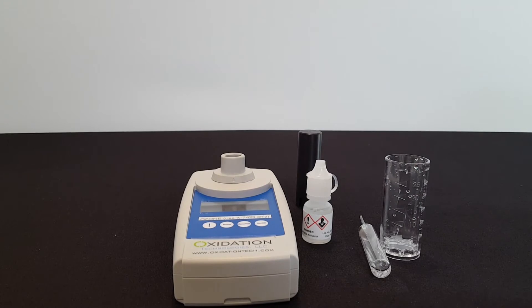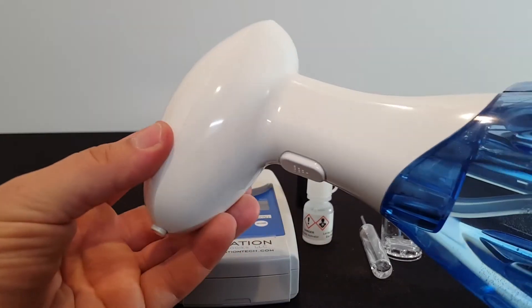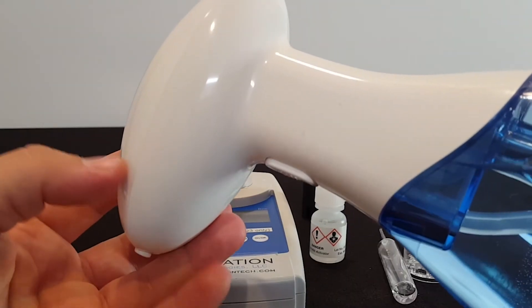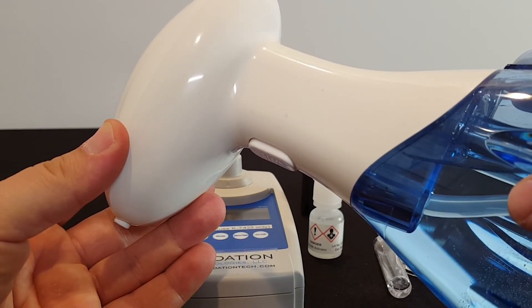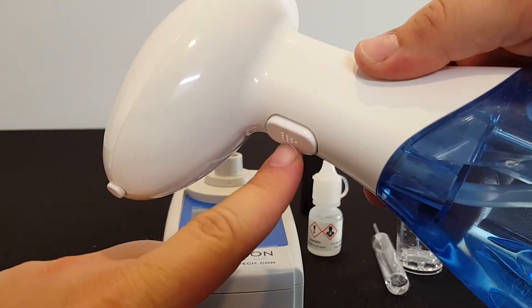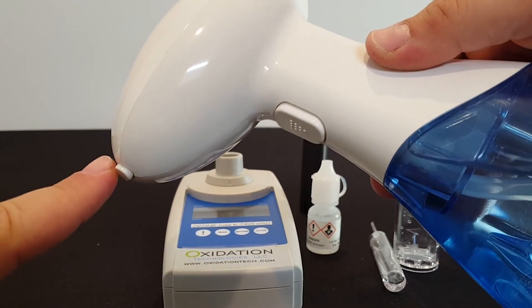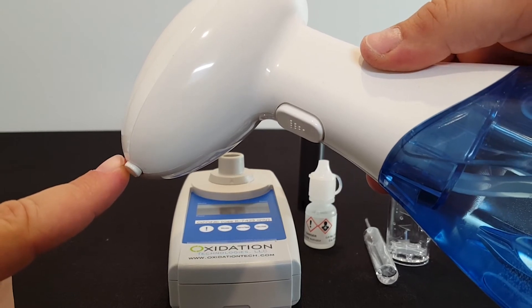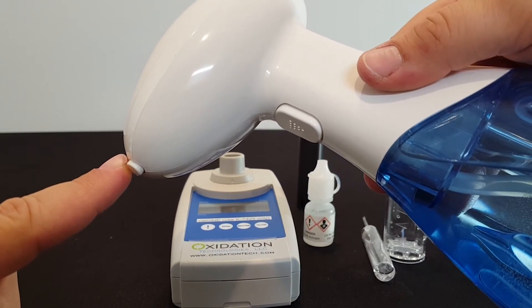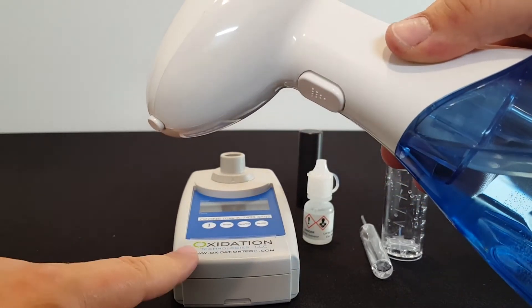I want to briefly explain also how I'm getting my dissolved ozone sample. This is a bottle that we carry that has dissolved ozone in its chamber, and then when this button is pressed, it produces dissolved ozone which comes out this nozzle. So this is what I'll be spraying into the test cup with the activator solution and using for the sample that will then measure with the meter.